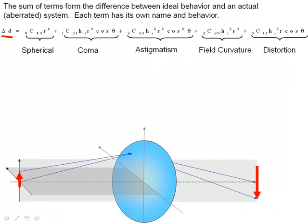And the five terms are known as spherical aberration, coma, astigmatism, field curvature, and distortion. And we'll, again, look at a physical picture of those in the next lecture.